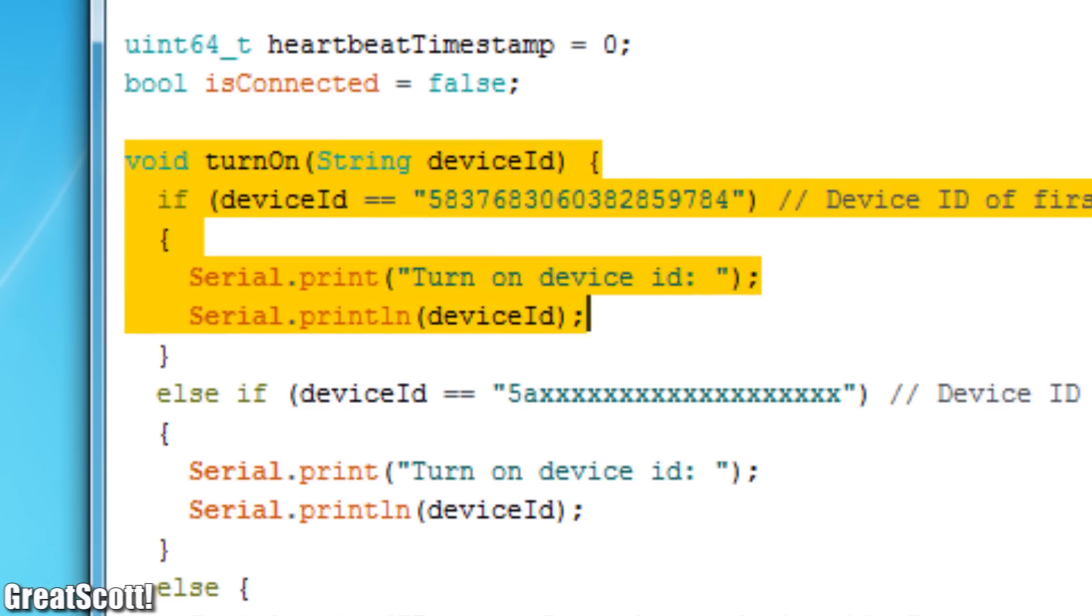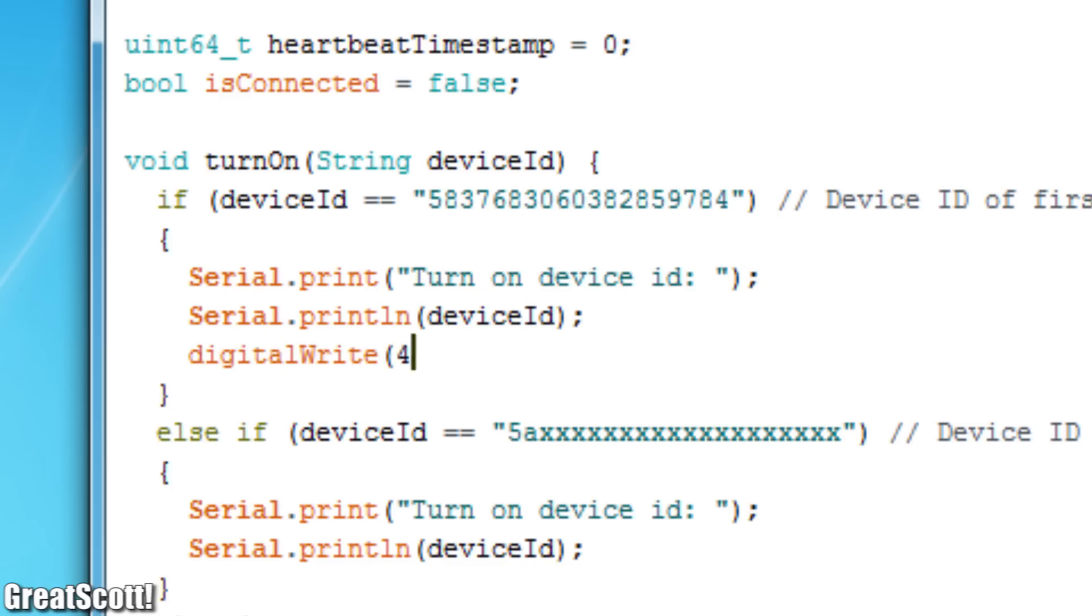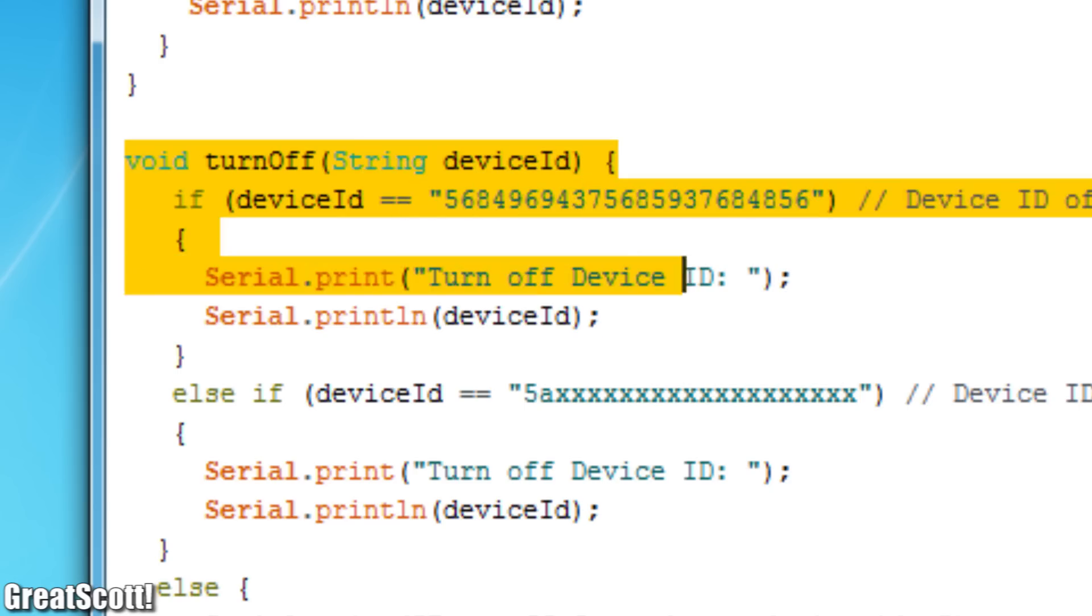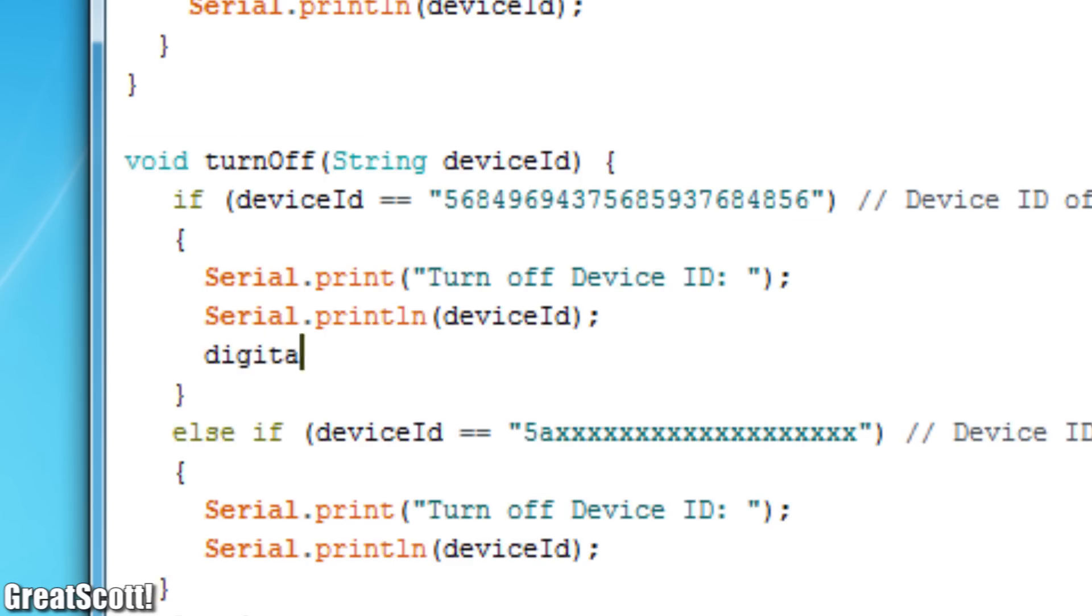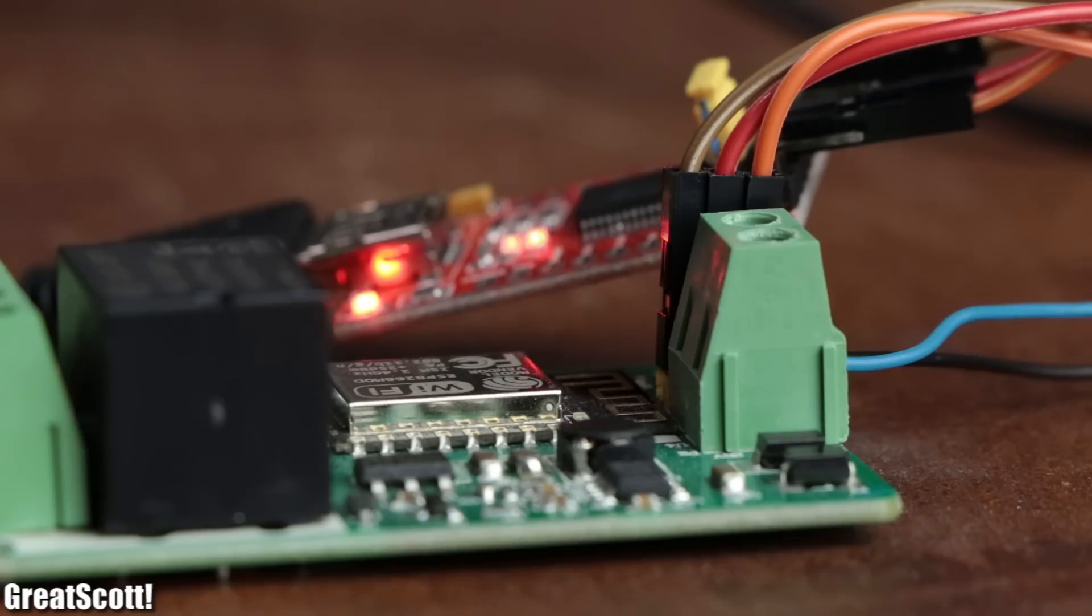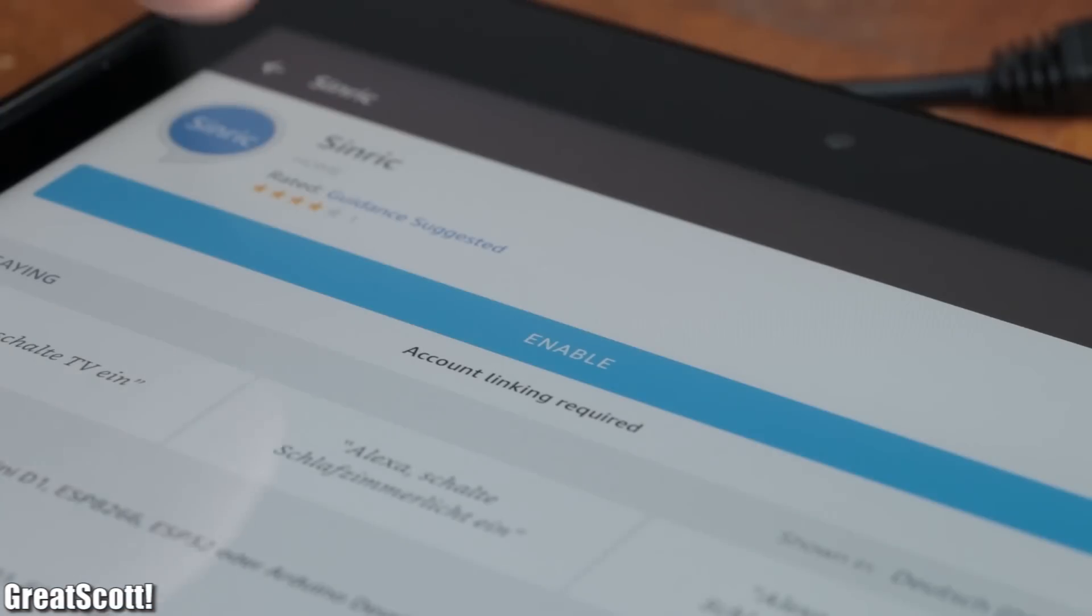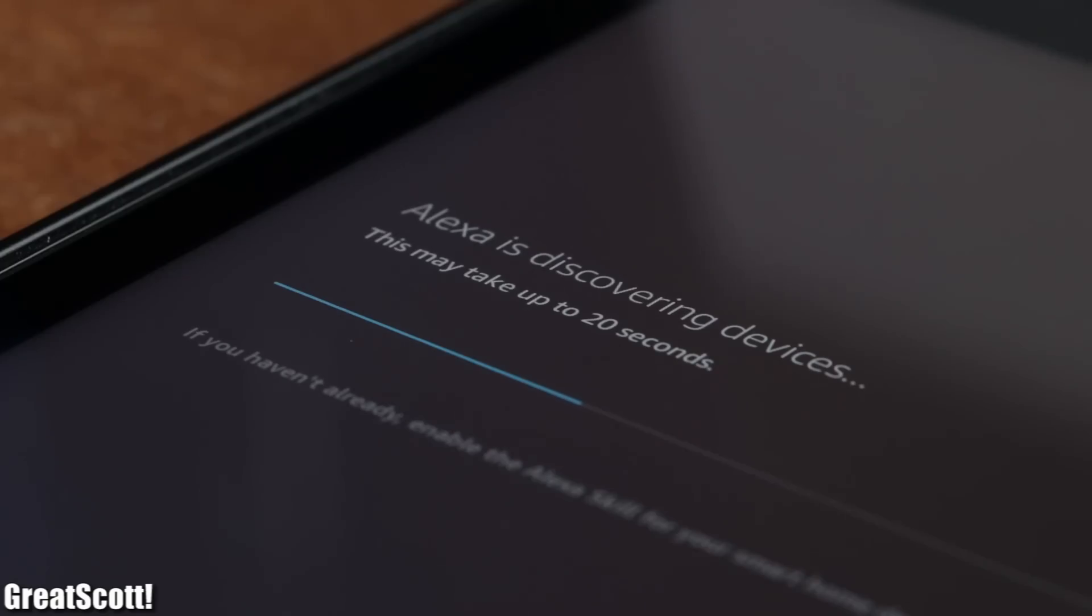Here I can now tell the microcontroller what to do when the device is being turned on or turned off, which is in my case a simple digital write function. And with that being done I uploaded this new code to the board, added the SinRic skill to Alexa, and searched for new devices, which this time was successful.